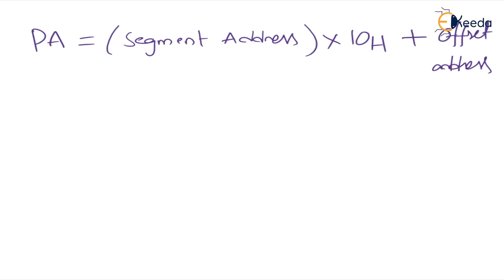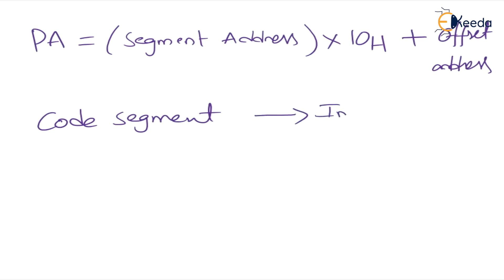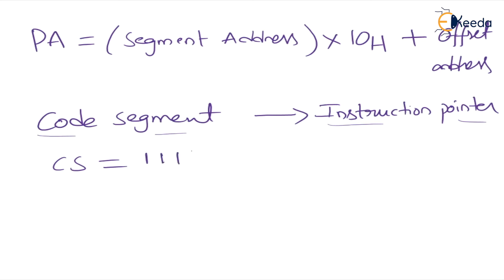Each segment register has one offset register. For example, for the code segment, the offset address is available in the instruction pointer. For code segment, the default offset address is in the instruction pointer. Let us consider the code segment value is 2211H and the instruction pointer is 0102H.